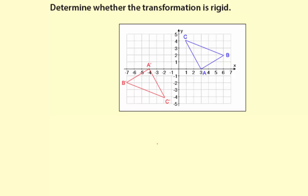Determine whether the transformation is rigid. Now if the transformation is rigid, the only thing that changed from triangle ABC to triangle A prime, B prime, C prime is its orientation.